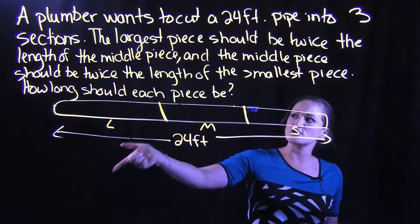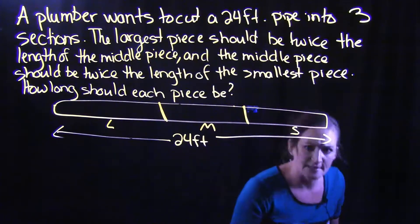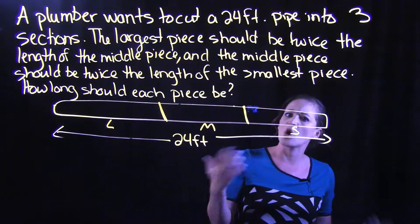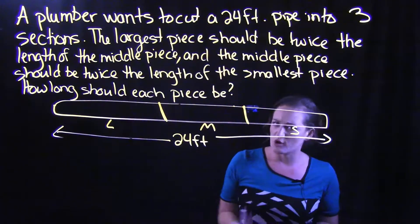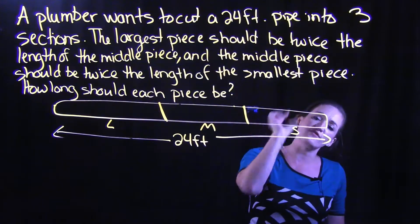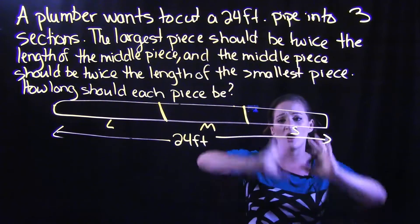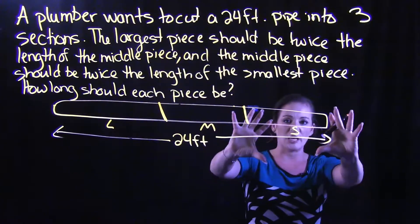It says the large is twice the middle, the middle is twice the small, but it doesn't say the small is twice anything or so many feet bigger or smaller than anything else. And since it does not refer to the small piece in a sense there, I'm going to call my small piece my starting point.